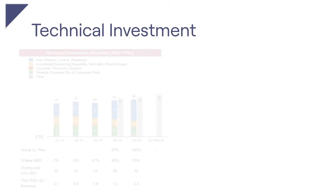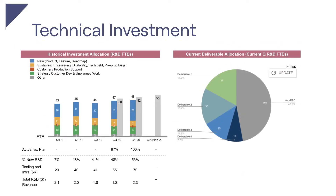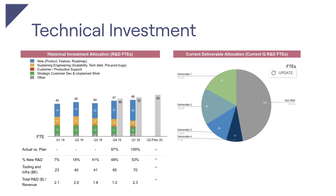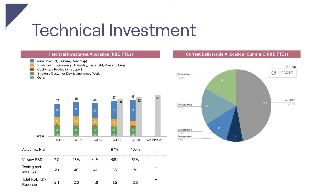Slide three focuses on technical investment. The goal of this slide is to offer transparency into what the team is doing and drive a shared understanding with the board and other executives around where the effort is going. Metrics to highlight here include a breakdown of how engineering efforts are allocated across different categories of work, and a breakdown of engineering allocation with regards to the current deliverables.